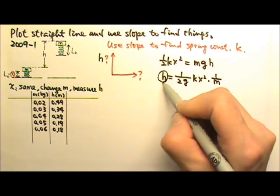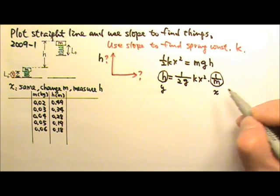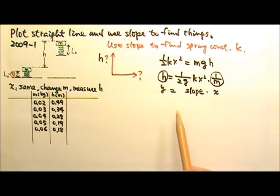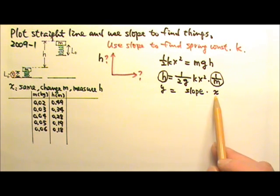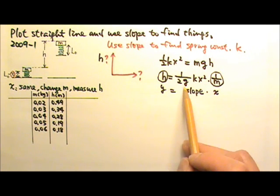So this is my y, and if I use this one for x, I would have a first degree equation. So this will be y equals slope times x, and the slope of the line would be this value.